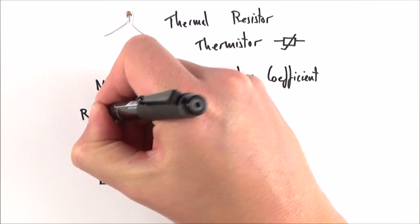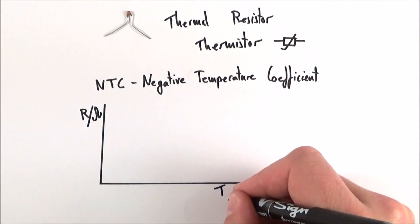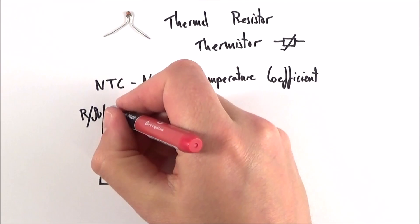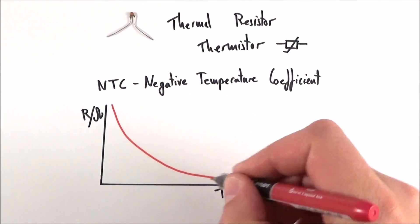What happens is as the temperature goes up, the resistance goes down. The important thing to note is the first part of the graph: over here, a small change in temperature means we have a large change in resistance.